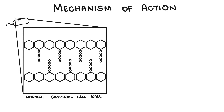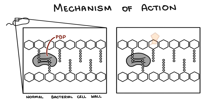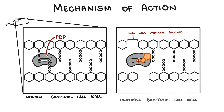So how do penicillins work? Penicillins inhibit bacterial cell wall synthesis by binding to what are called penicillin-binding proteins, or PBPs. PBPs are really important in cell wall synthesis. As shown in this diagram, penicillin latches on to the PBPs and inhibits the transpeptidation of peptidoglycans, therefore inhibiting cell wall synthesis, causing an unstable cell wall and leading to bacterial death.